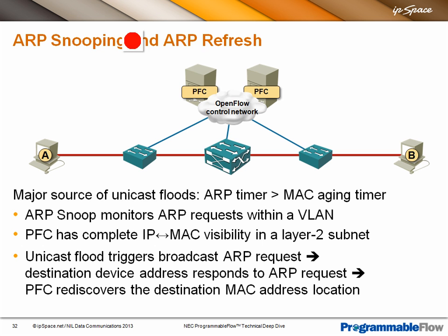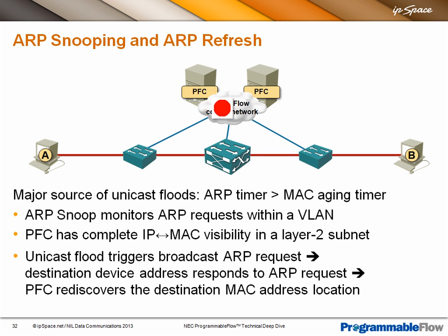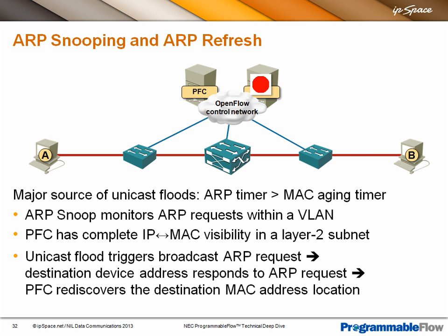You can configure ARP snooping and ARP refresh on the Programmable Flow controllers. ARP snooping is straightforward: all ARP requests also go to the Programmable Flow Controller, which needs to listen to ARP requests anyway to answer when someone asks for the MAC address of the virtual router. With ARP snooping, PFC now has complete IP-to-MAC visibility. When packets are sent toward B and B's MAC address is unknown, PFC can send an ARP request for B. It knows B exists, and once B responds, we know where B is — eliminating most anomalous unicast flooding.